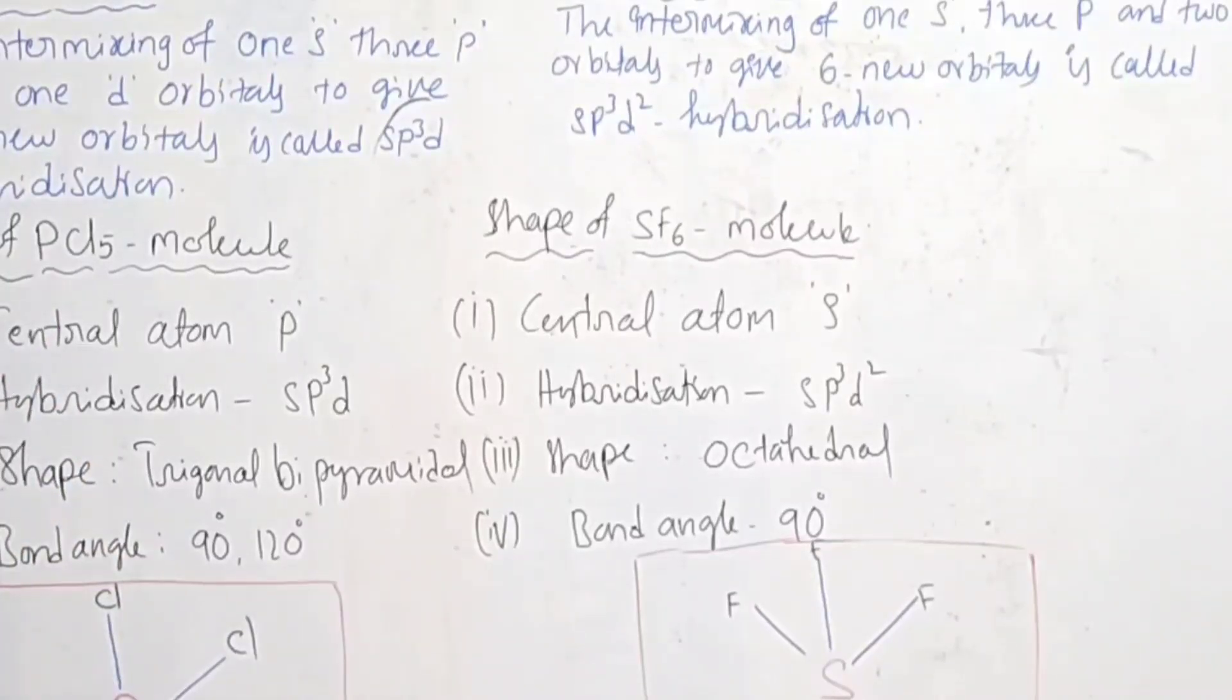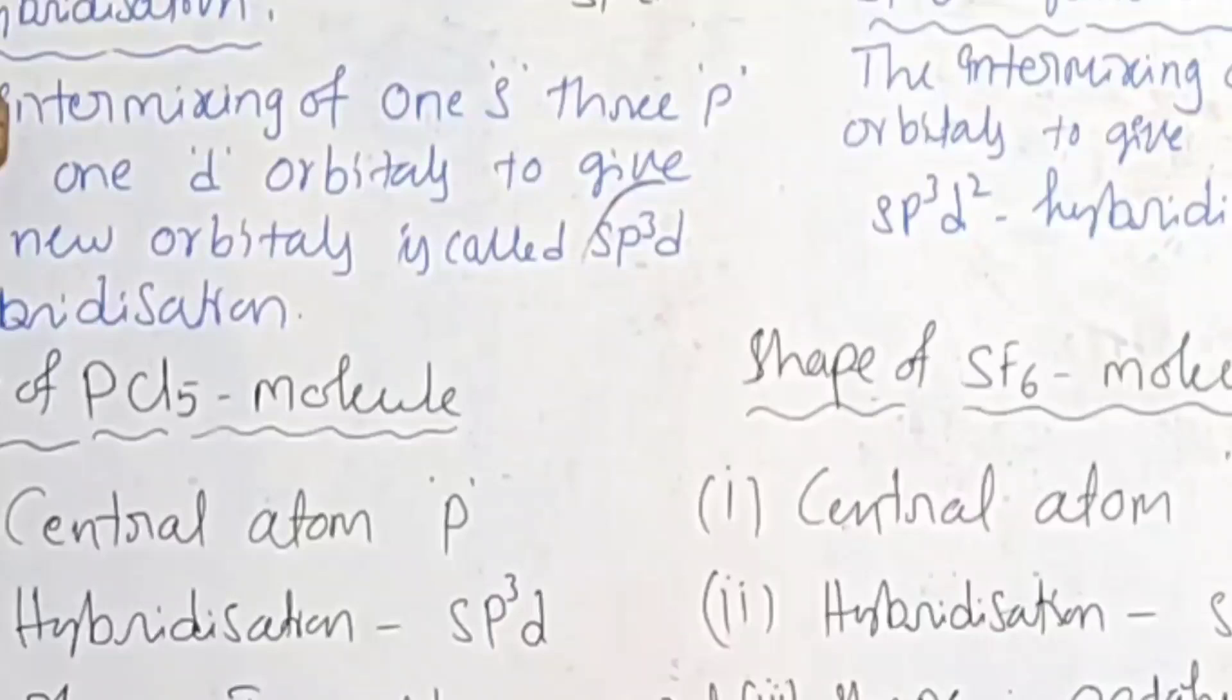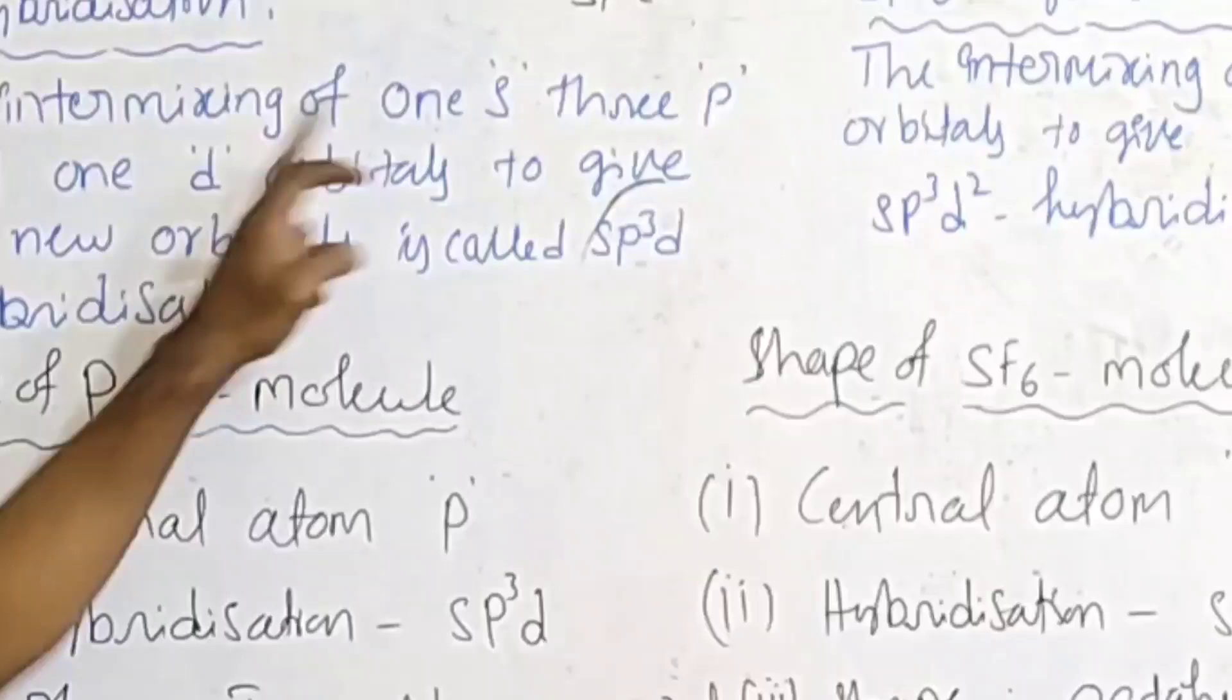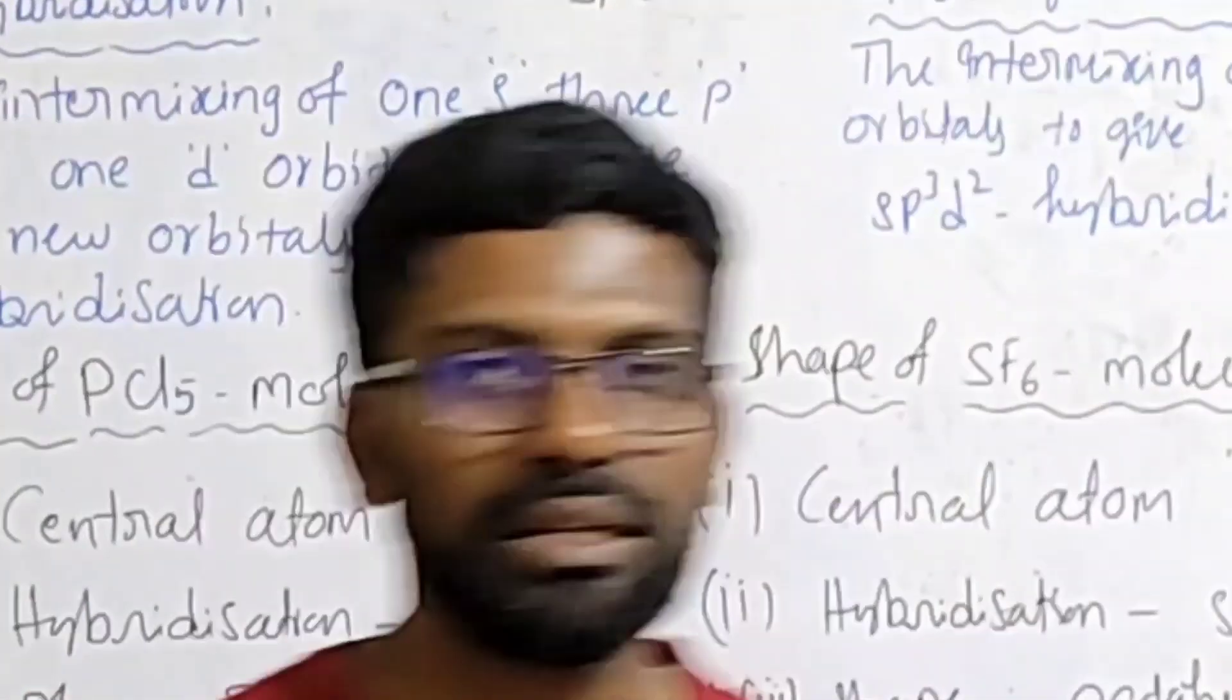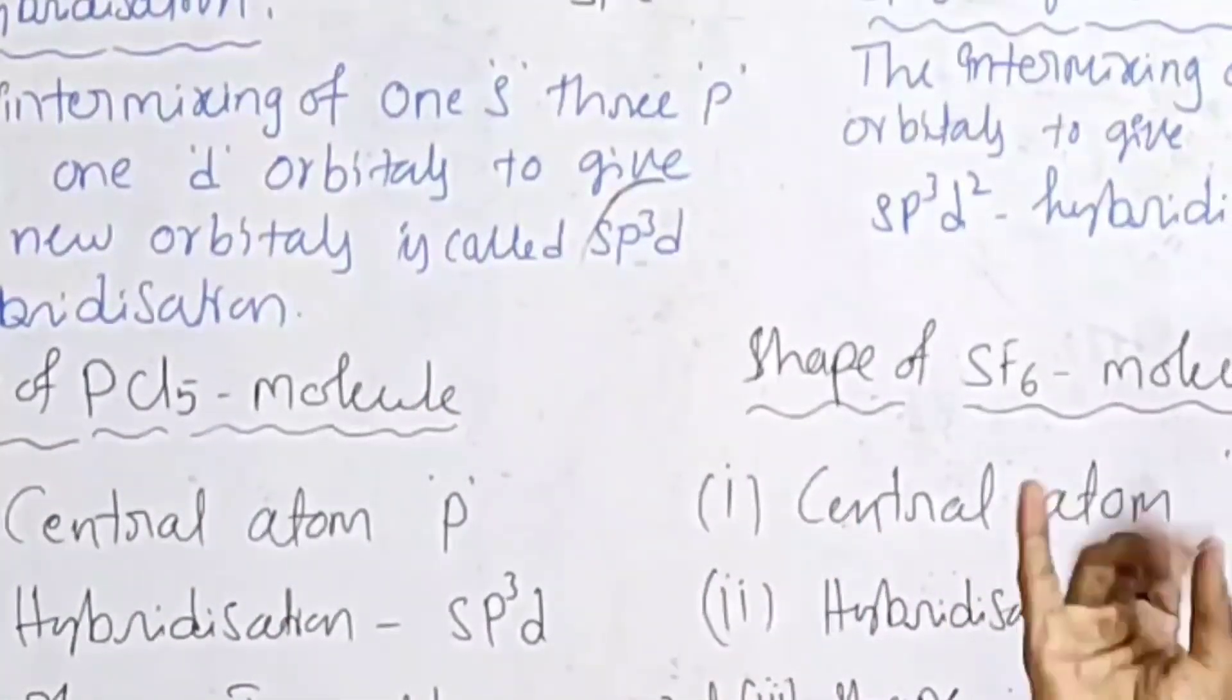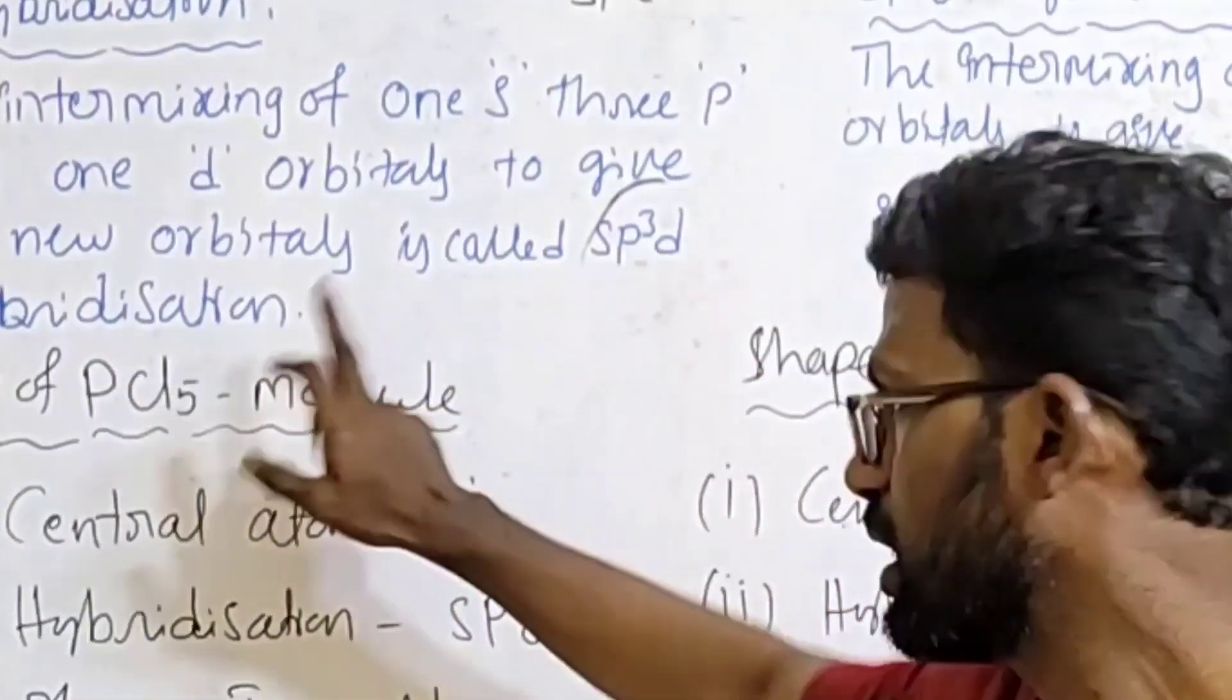SP3d1 hybridization: The intermixing of 1 s orbital, 3 p orbitals, and 1 d orbital - that is 1s, 3p, and 1d - to give five new orbitals is called sp3d hybridization.